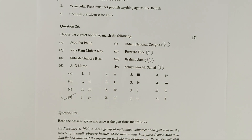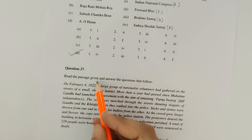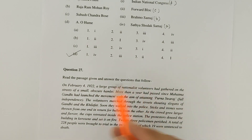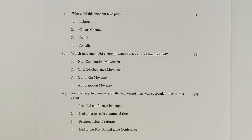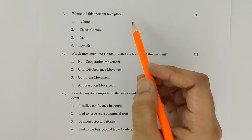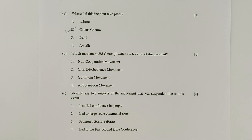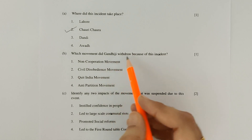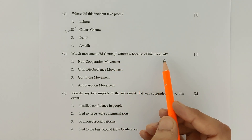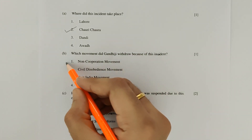Moving on to Part 3, Question 27 is a passage-based question. Read the passage and answer the questions that follow. Sub-part A: Where did the incident take place? The passage is about the Chauri Chaura incident — hence option 2, Chauri Chaura, is correct. Sub-part B: Which movement did Gandhiji withdraw because of this incident? Gandhiji withdrew the Non-Cooperation Movement — option 1 is correct.